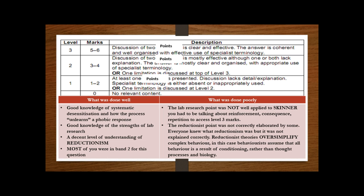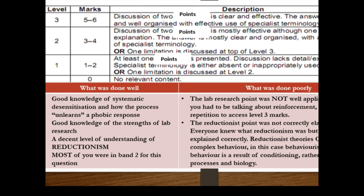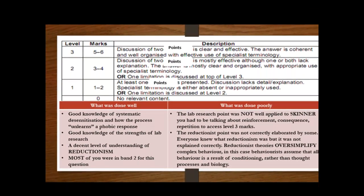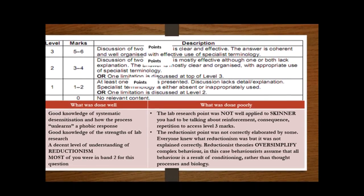Again, just have a look at what you did well. So good knowledge of systematic desensitization and the process of how we unlearn a phobic response was very, very well explained. Good knowledge of the strengths of lab research—so controlling EV, standardized procedures, cause and effect. A decent understanding of reductionism, but you'll see why a lot of you were criticized there. And most of you are in band two, so you got between three and four. Remember, it is three and three, so it's three marks per evaluation point.